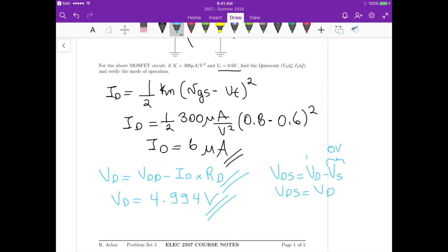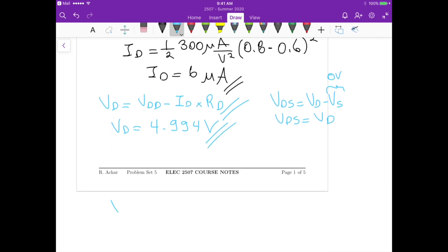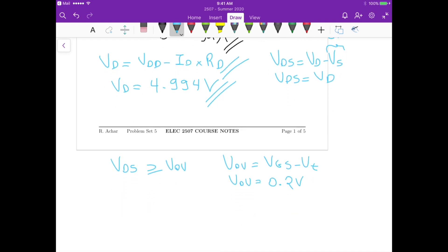And then we know that for saturation operation, we need to have Vds greater than or equal to the overdrive voltage, and the overdrive voltage is Vgs minus Vt, which in this case is 0.2 volts, 0.8 minus 0.6. And then we just conclude that 4.994 is greater than 0.2, therefore it's operating in the saturation region. Okay, so that's it for this problem.